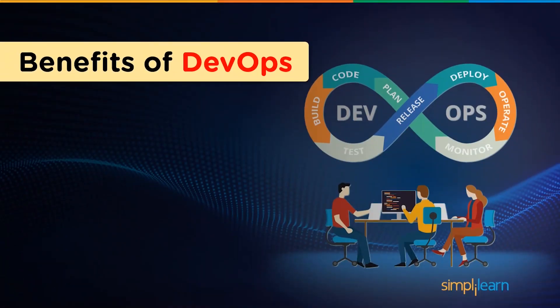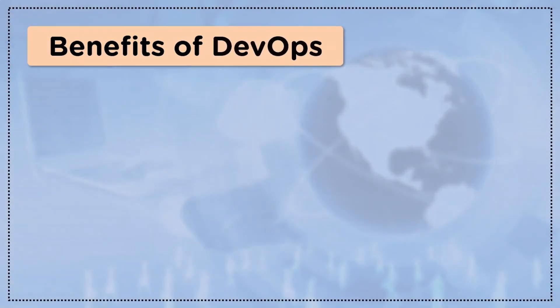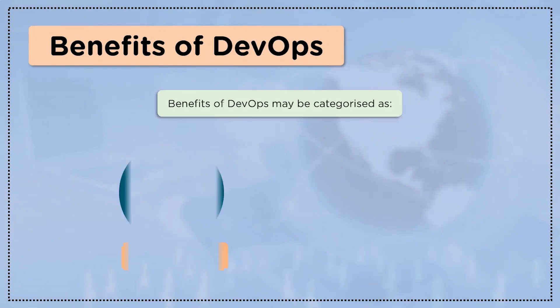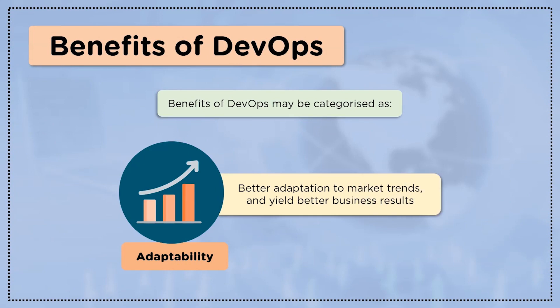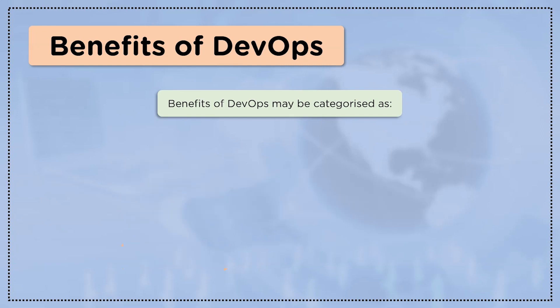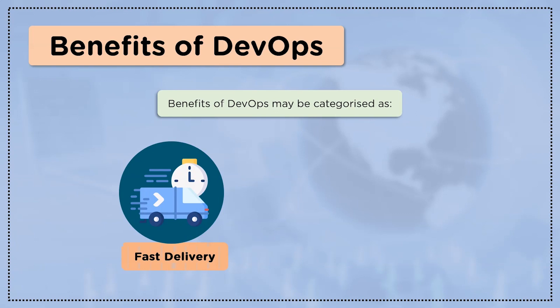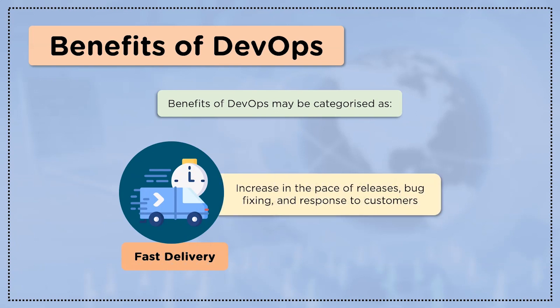Now let's have a look at some benefits of DevOps. The first category is adaptability — DevOps makes it possible for organizations to adapt better to market trends and yield maximum outputs. Another benefit is fast delivery: DevOps makes it possible to increase the pace of releases, bug fixing, and response to customers.